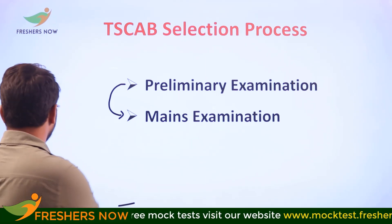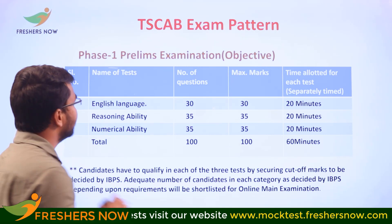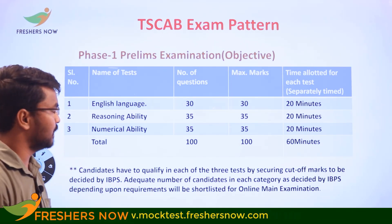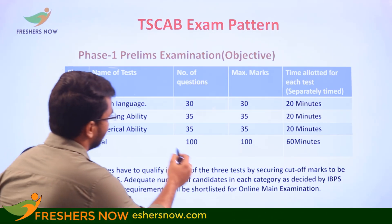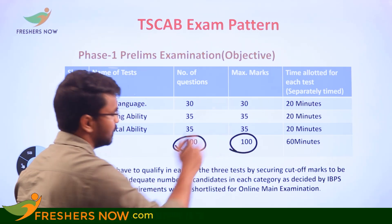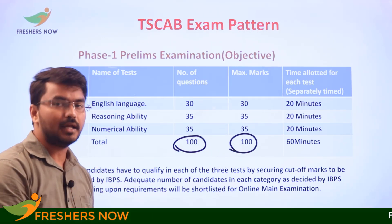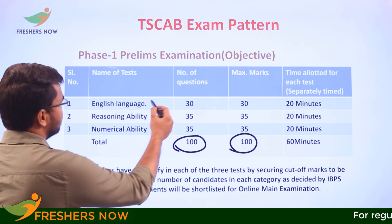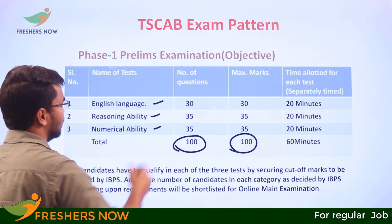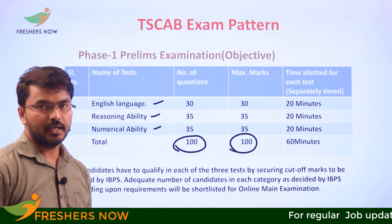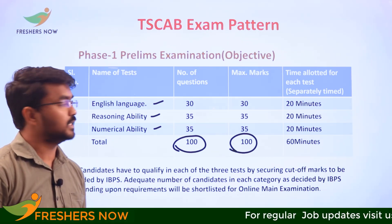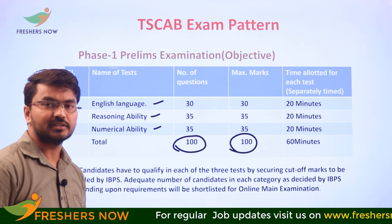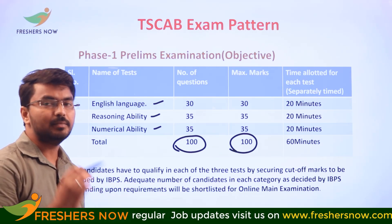Moving on to the exam pattern. The first exam is the preliminary exam. The question paper is divided into three sections. Each section has 20 minutes allotted, making a total of 60 minutes. The three sections are: English, Reasoning Ability, and Numerical Ability.